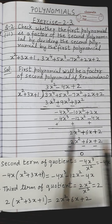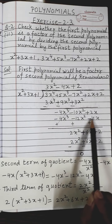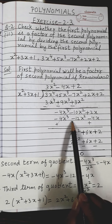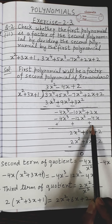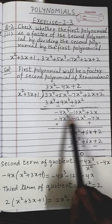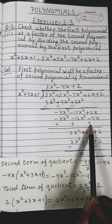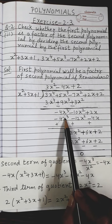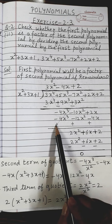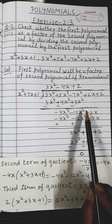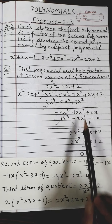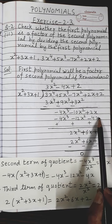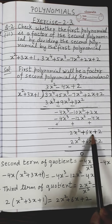Now I subtract these two polynomials by reversing the signs: minus becomes plus, minus becomes plus, minus becomes plus. Carrying out the subtraction: -4x³ + 4x³ = 0, which I show by cancelling. Next, -10x² + 12x² = +2x². Next, +2x + 4x = +6x. Subtraction is complete.